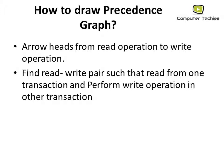Next, find read-write pairs such that a read occurs in one transaction and a write operation is performed in another transaction. So given a schedule, we search for read-write pairs where one transaction reads the data and another transaction writes the data. The arrow points from the read operation to the write operation.